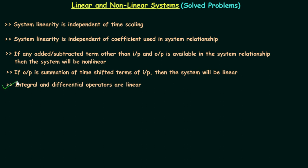In the last lecture we got our fifth property. According to the fifth property, integral and differential operators are linear operators. This means whenever we have integral and differential operators in our system relationship, the system is going to be linear. To understand this, let's take one example.